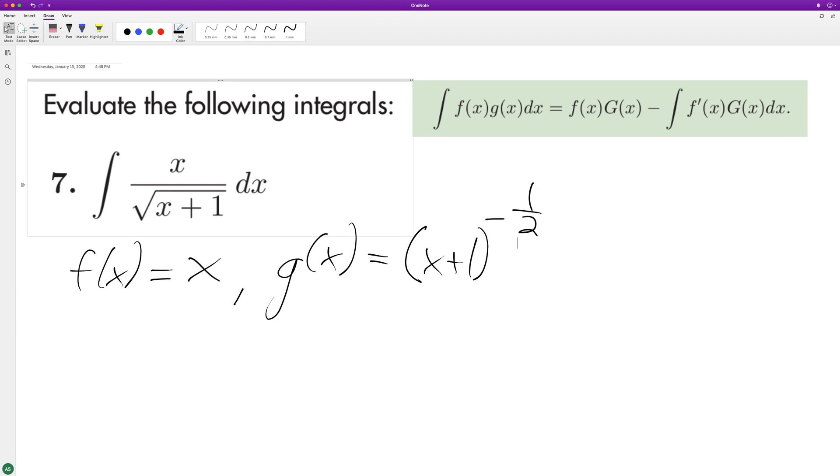It's the same thing as one over the square root of (x+1). So following up here, we're going to take f of x times capital G of x. That's the integral of (x+1) raised to the negative one-half, which is going to be equal to 2(x+1). We raise the negative one-half by one, so it becomes one-half.